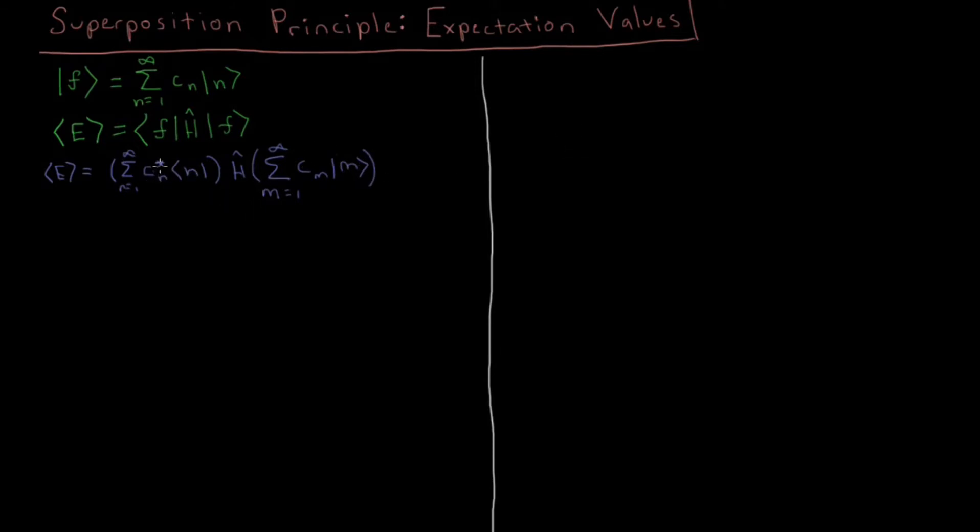So right away we can see we've got this constant here, this constant there, those two are going to multiply. We can pull those out in front of the integral, because the integrals are linear. We can pull the sum out as well, because that integral is a linear operation. So we have expectation value of E equals sum of n equals 1 to infinity, we have a double sum now, sum m equals 1 to infinity, cn star, cm, n, H, m, for that integral.